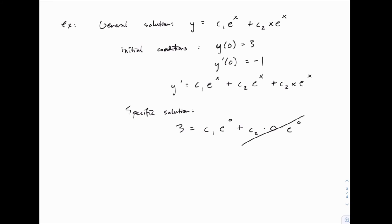So this simplifies to just be 3 equals c1, which means we now know the value of one of these arbitrary constants.